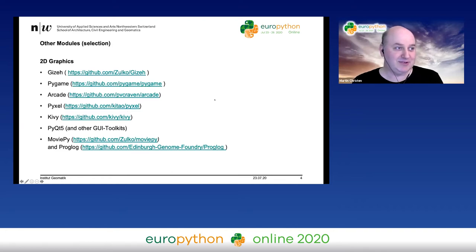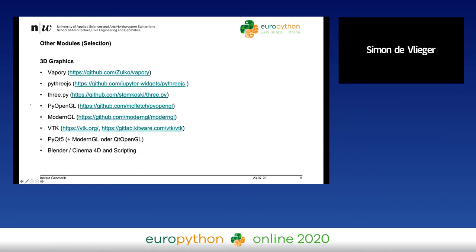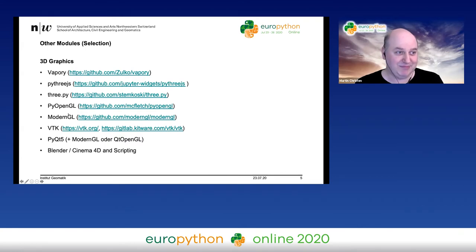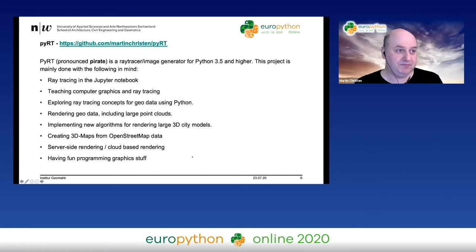There are many other modules doing the same thing. For 2D graphics we have Arcade for games, Pixel for retro games, Kivy for mobile applications, various GUI toolkits, and MoviePy for creating movies from still images. For 3D graphics there's OpenGL — though that's overkill, you'd end up with 200 lines of code just to draw a triangle. There's also Blender and Cinema 4D which you can script using Python.